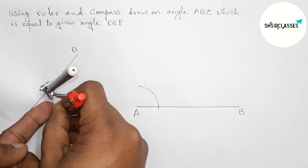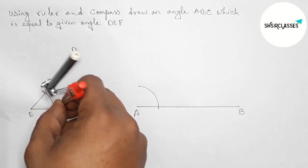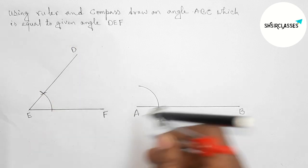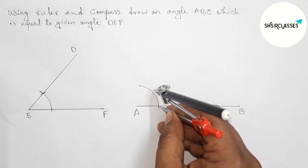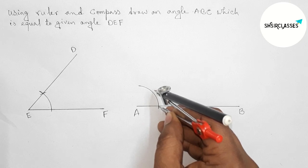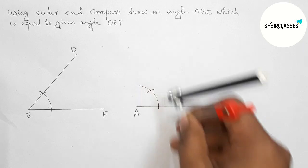by this way. So here this is perfect. Okay, now putting the compass here with same length and now cut here.